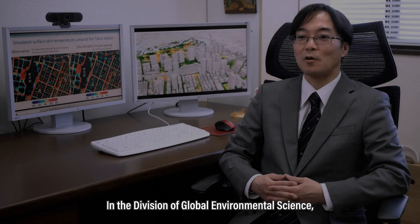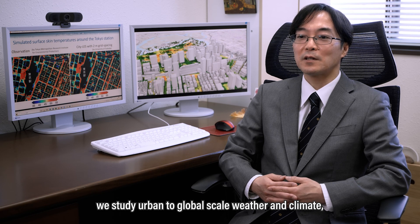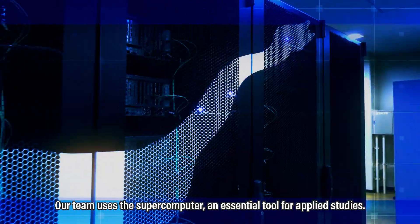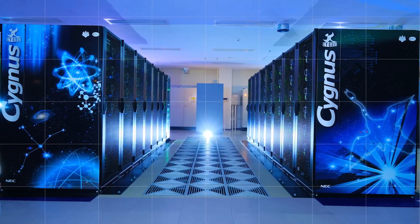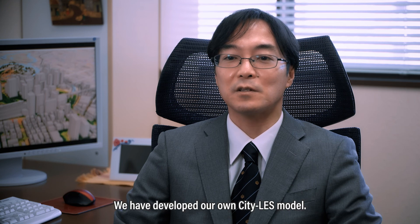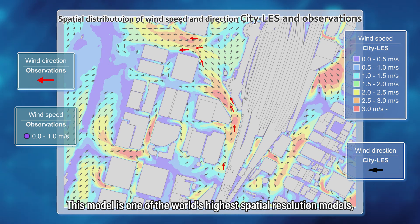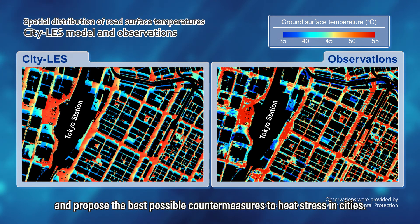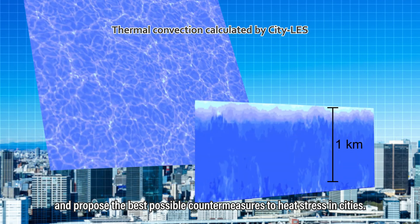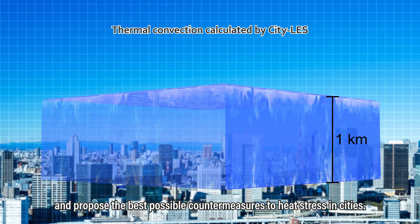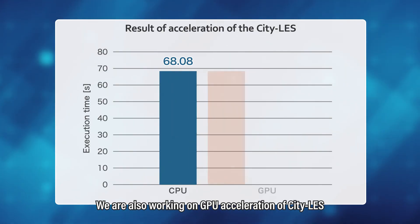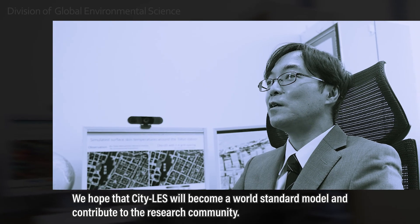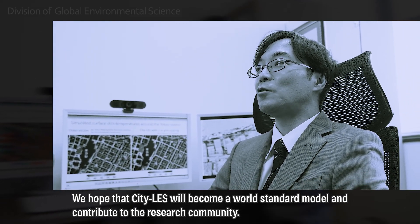In the division of global environmental science, we study urban-to-global-scale weather and climate using various numerical simulation models. Our team uses the supercomputer as an essential tool for applied studies. We have developed our own city area model, City LES, one of the world's highest spatial resolution models, which can simulate urban thermal, wind, and radiation environments and propose the best possible countermeasures to heat stress in cities. We are also working on GPU acceleration of City LES in collaboration with the Division of High Performance Computing Systems, and hope it will become a world standard model.